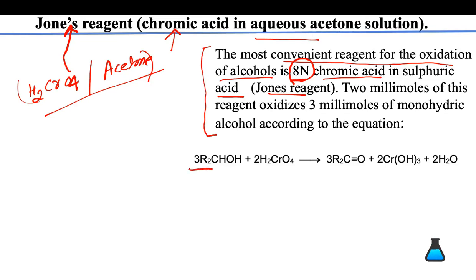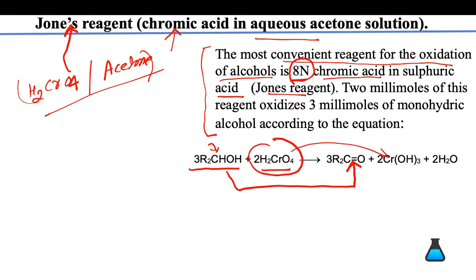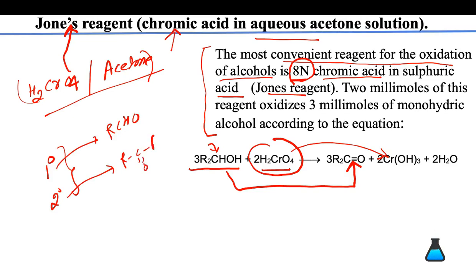If you take a secondary alcohol with chromic acid (H2CrO4), it is converted to a ketone. If you take a primary alcohol, it is converted to an aldehyde, and H2CrO4 is converted to Cr2O3. So: a primary (1°) alcohol is converted to aldehyde by Jones' reagent, a secondary (2°) alcohol is converted to ketone by Jones' reagent, and a tertiary (3°) alcohol generally cannot be oxidized by Jones' reagent.